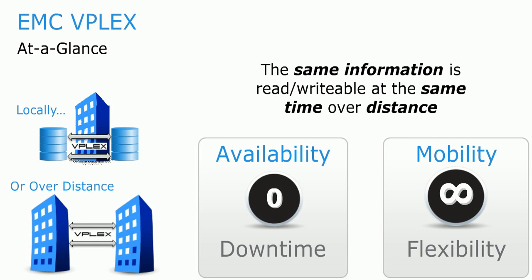EMC VPLEX is an important part of the Data Protection and Availability Continuum. VPLEX enables users to have the exact same information simultaneously with read-write access in two data centers at the same time. This enables the VPLEX family to deliver continuous availability and non-disruptive data mobility across data centers at synchronous distances, up to 5 milliseconds latency.